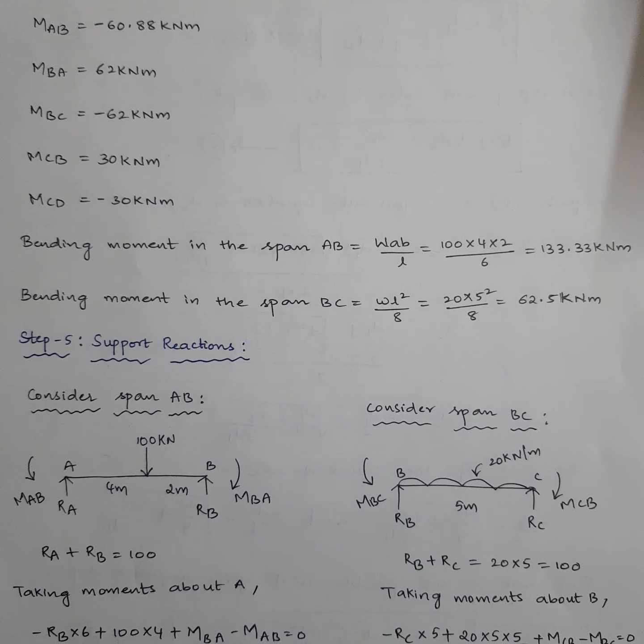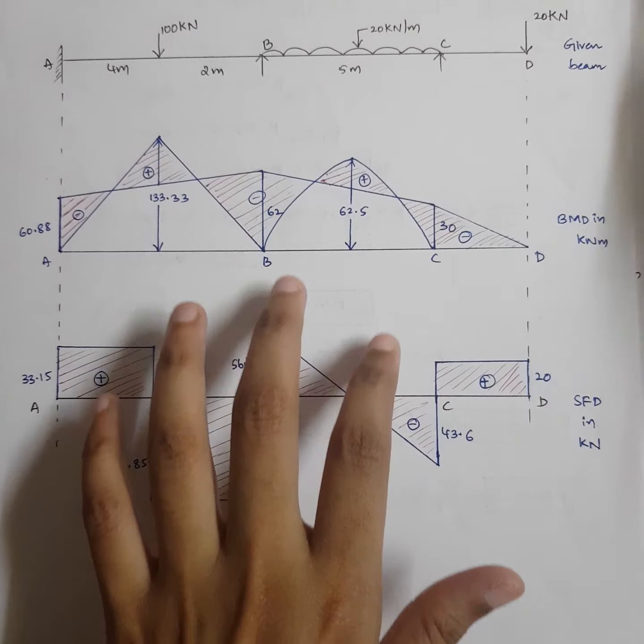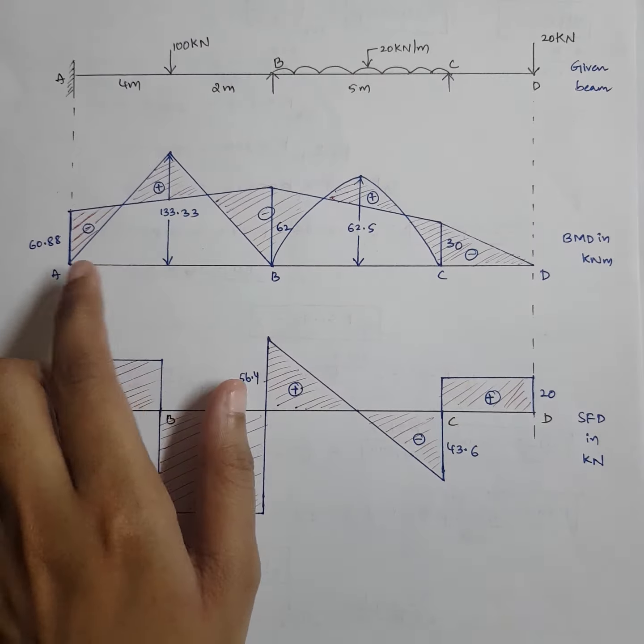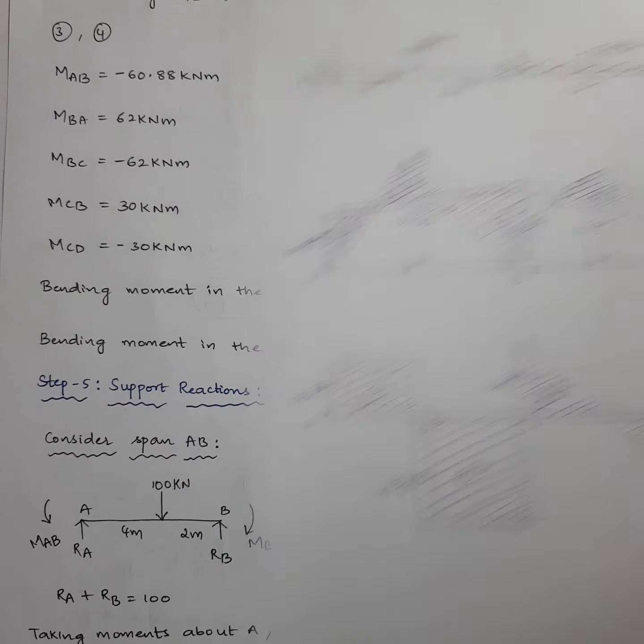Now let's look at the bending moment diagram. Mark M_AB = minus 60.88 at A, M_BA = M_BC = 62 at B, and M_CD = minus 30 at D. Join these with straight lines for the end moments, then overlay the free BMD — a triangle of height 133.33 in span AB and a parabola of height 62.5 in span BC. The net bending moment is the shaded portion left over after superposition.